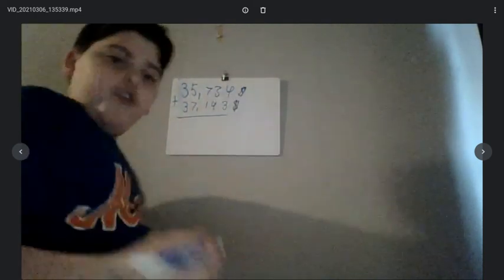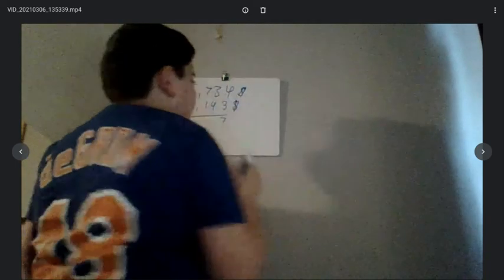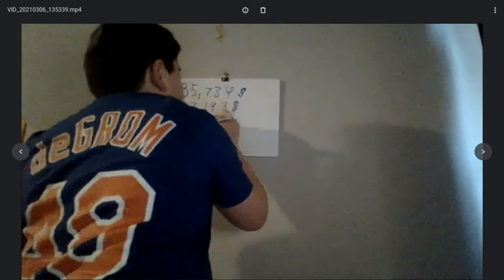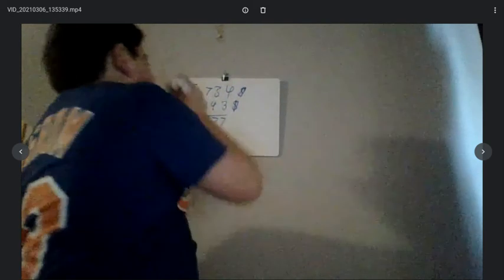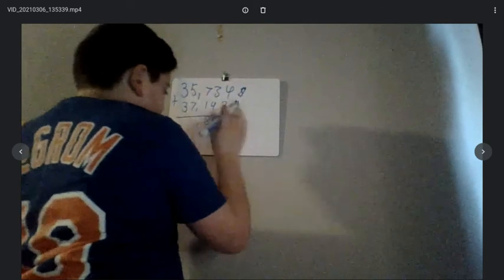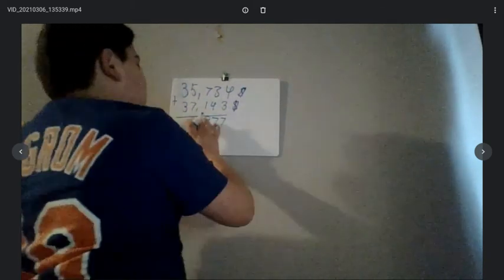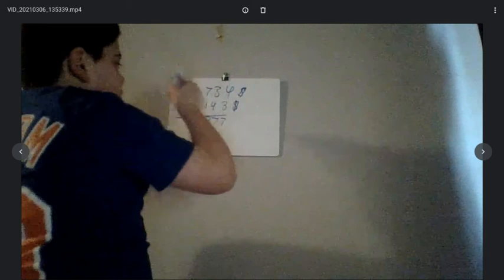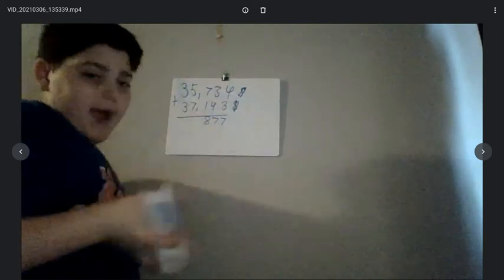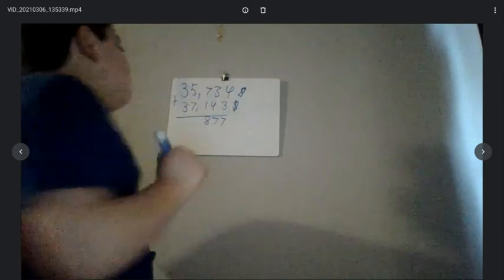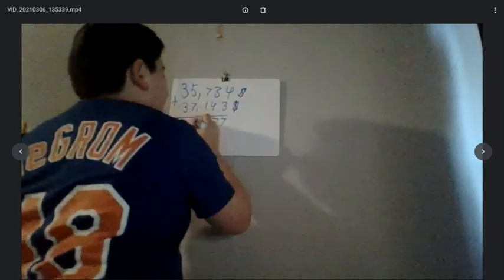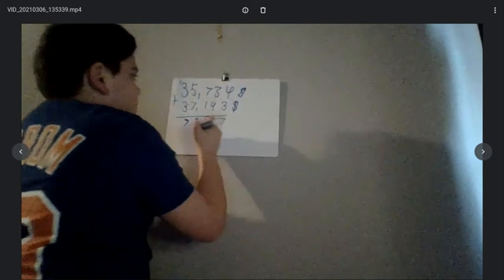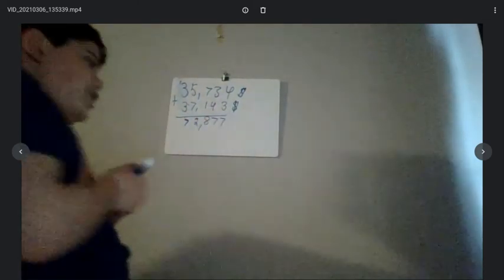And now we're going to add 3 and 4, which gives you 7. 4 plus 3 is 7. And then 4 plus 3 again is 7. 1 plus 7 is 8. Now you're going to put your comma. I normally do 7 plus 5 and 3 plus 3 first before I add the comma to get my final sum. So now I'm going to add 5 plus 7, which will give you 12. Put the 2 down and carry your 1. Now 3 plus 3 plus 1 is 7. So that would be $72,877.